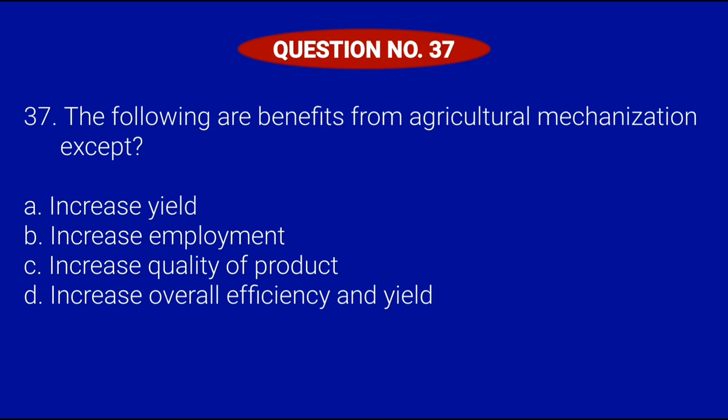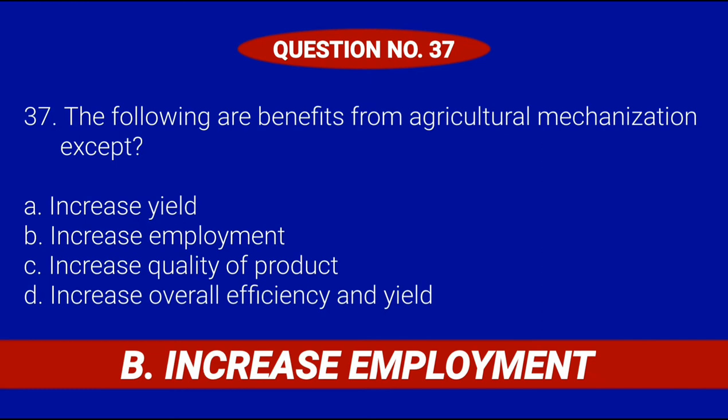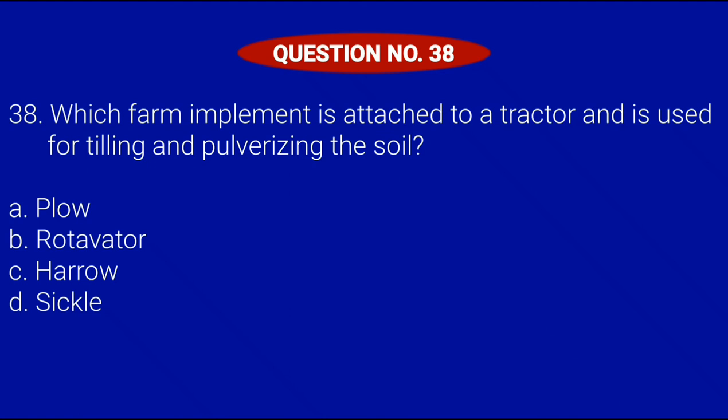Question number 37. The following are benefits from agricultural mechanization except: Letter A, Increase yield; Letter B, Increase employment; Letter C, Increase quality of product; or Letter D, Increase overall efficiency and yield. Correct answer is Letter B, Increase employment.